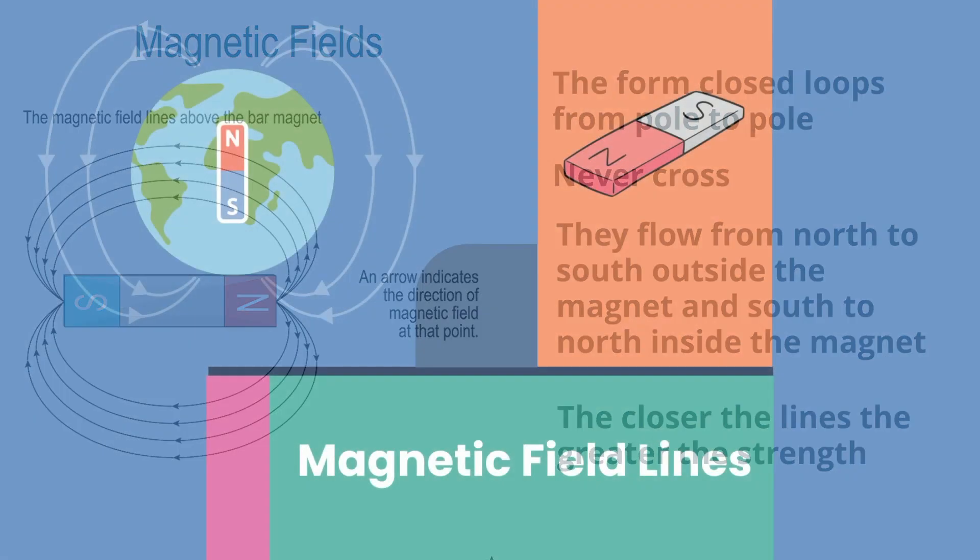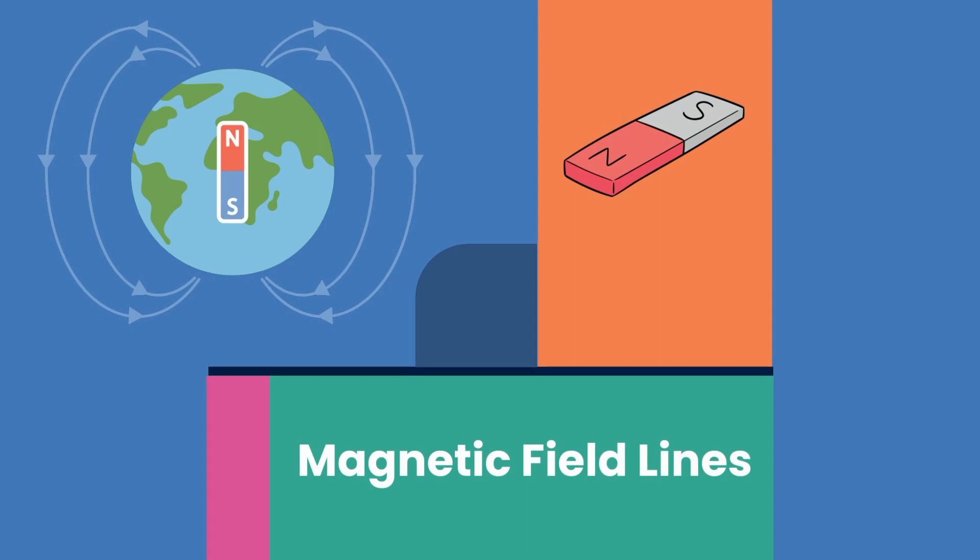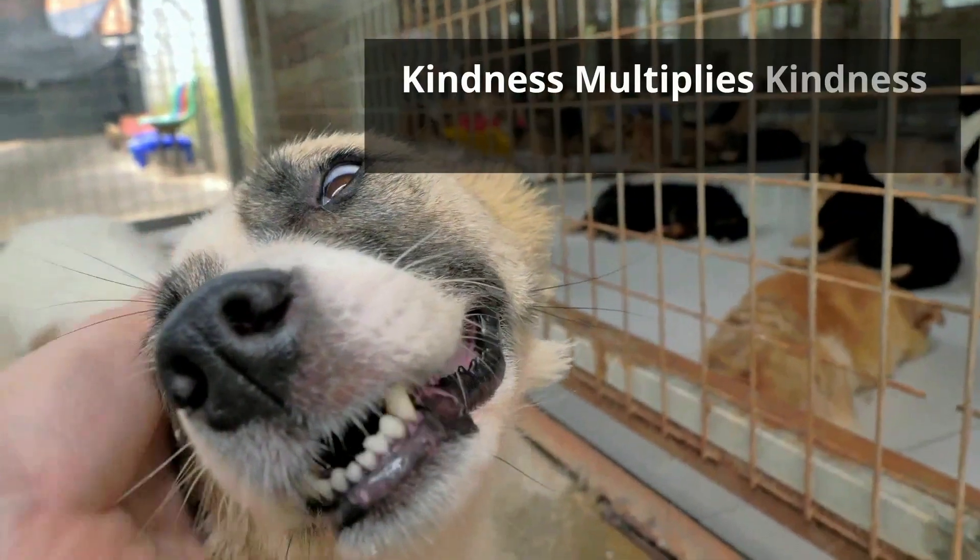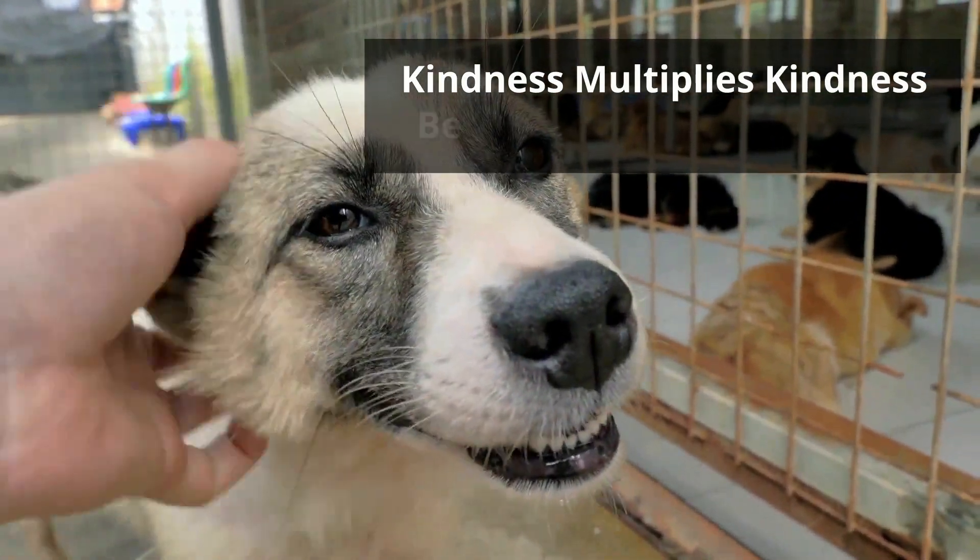So there we go, two ways to look at magnetic field lines. Thanks for watching, and remember, kindness multiplies kindness. Be kind to someone today.